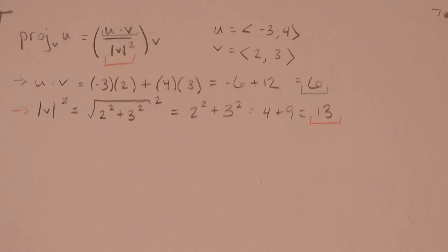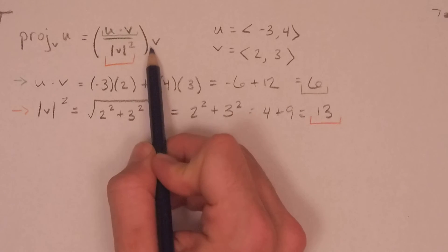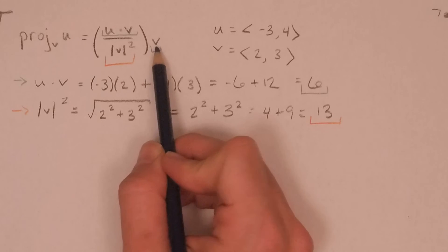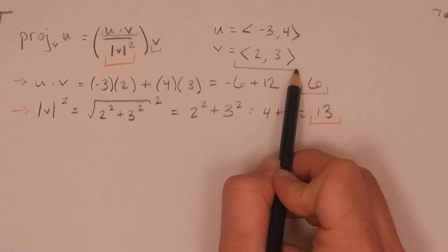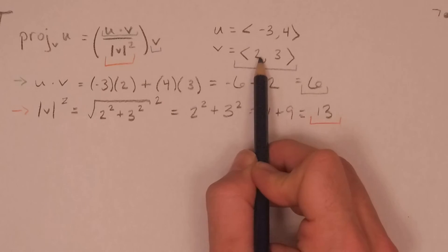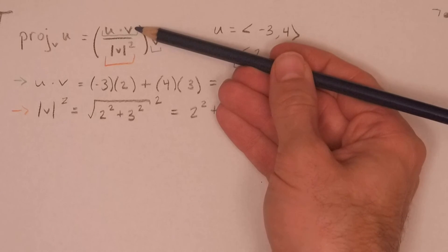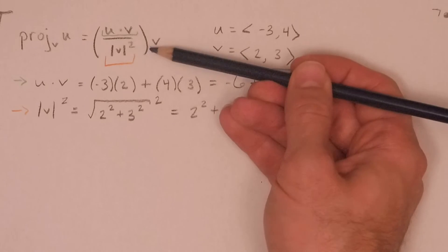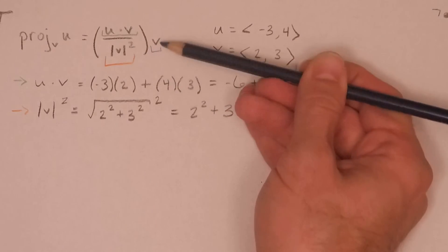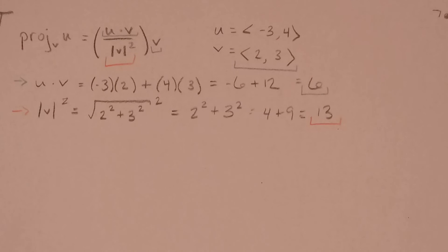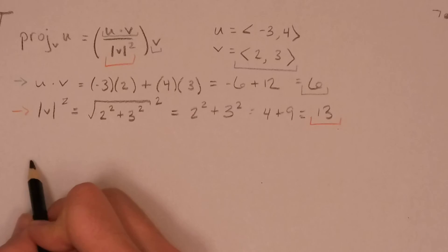So, the last thing we really need to identify here for our projection of u on v is this right here. Well, that one's easy. It was actually part of what was given to us. It's this entire vector right here. Remember we had a real number divided by a real number. And all of that being multiplied by a vector. And we have all of our parts for the projection of u on v. We just have to fill it in.